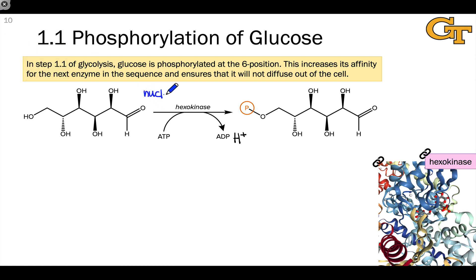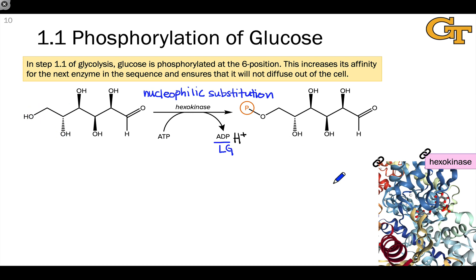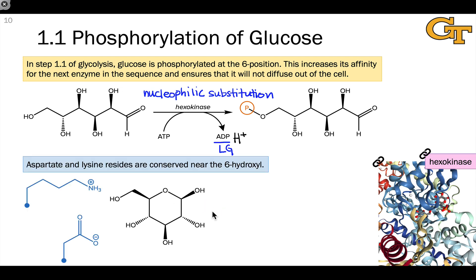Like all phosphorylation reactions, we can think of this as a nucleophilic substitution at phosphorus. ADP departs as a leaving group, and the hydroxyl group linked to carbon six is used as the nucleophile. So really, the enzyme's goal is to steer the terminal phosphate group of ATP in the vicinity of the six-hydroxyl group.